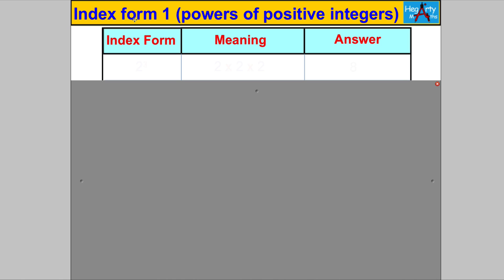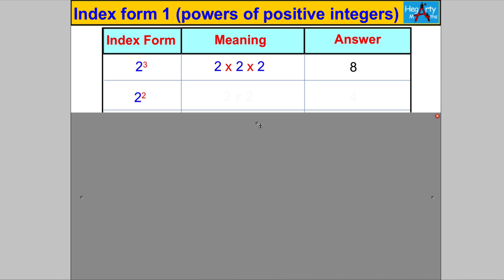That's index notation — so simple. Now I want us to fill in some tables of index notation to get the feel and flavor of what they look like and start spotting some patterns. For example, 2 cubed or 2 to the power of 3 means 2 times 2 times 2, which is 8. The next one: 2 squared means 2 times 2 and the answer is 4.